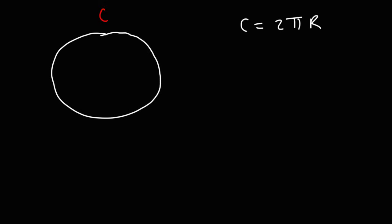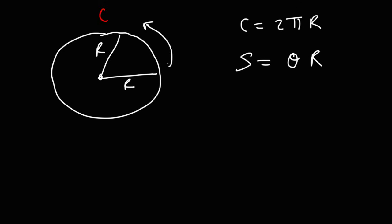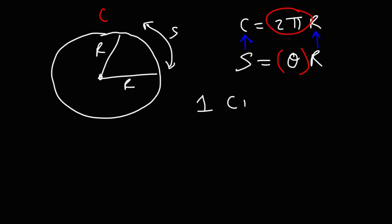This equation comes from the arc length equation: S is equal to theta times R. The radius is drawn, and S equals the intercepted arc. We could extend S such that it equals the entire circumference of a circle. When S is equal to the circumference of a circle, R is still equal to R, but that means the intercepted angle is equal to 2 pi radians. So for one complete circle, the angle measure is 2 pi radians or 360 degrees.